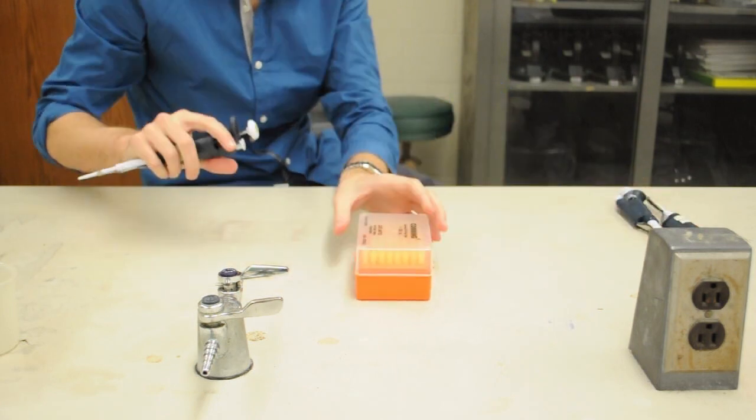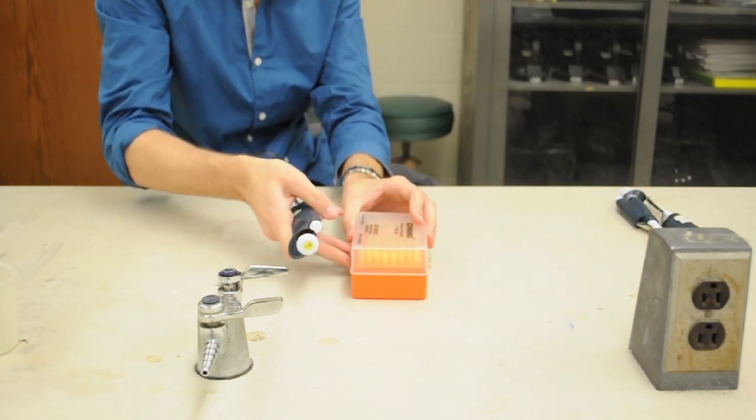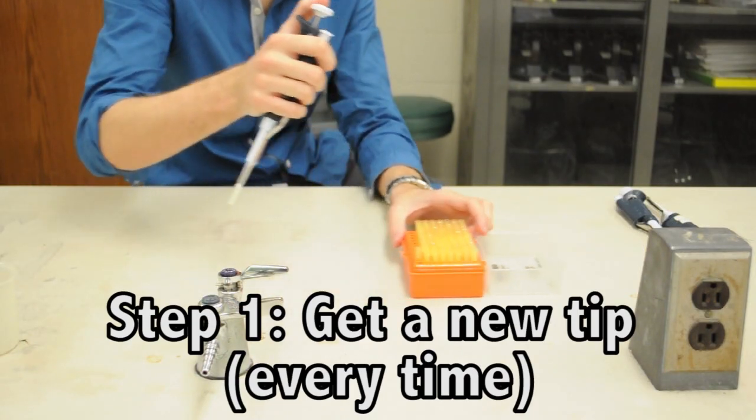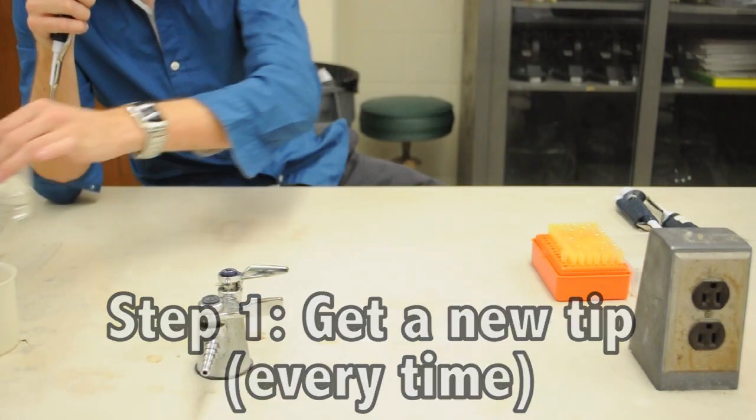Now I'll take you through the steps of actually using the micropipet. First you need to get a new tip every time you use a new substance or the tip you're using touches anything.